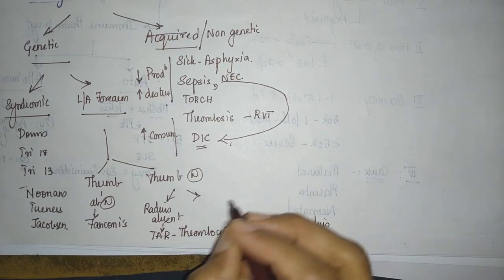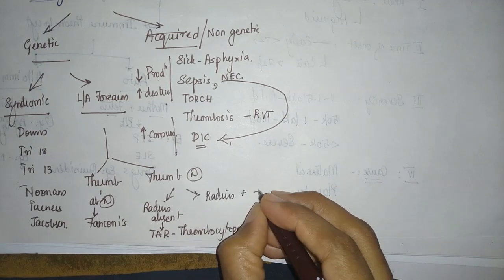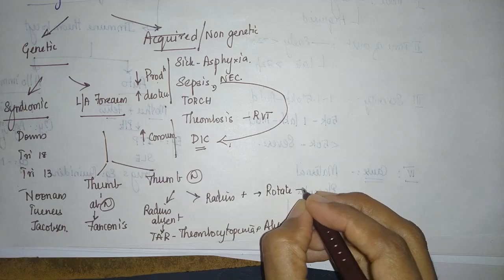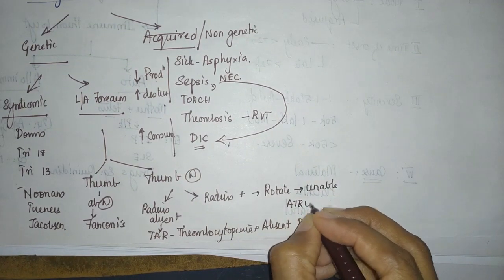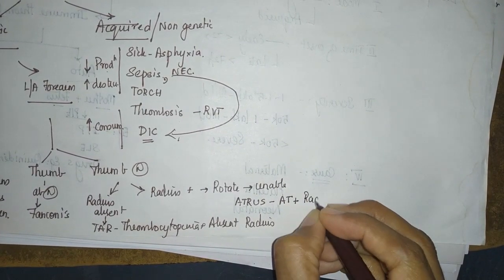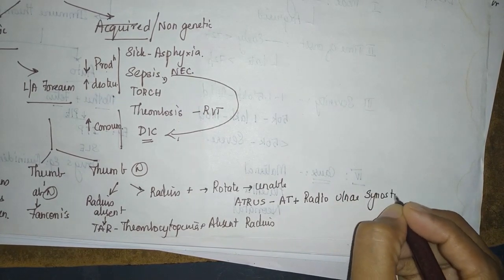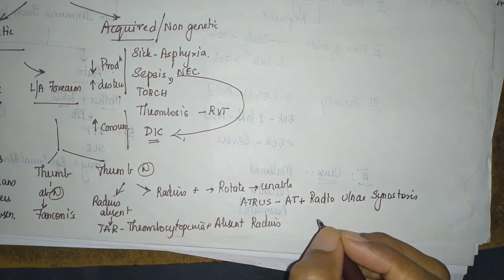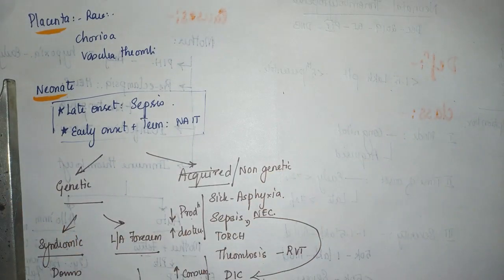If the radius is present, try to rotate the forearm. If you are unable to rotate, then you can think of ATRES — thrombocytopenia plus radio-ulnar synostosis. The bones are fused together and you can confirm it through radiological investigation. These are some of the causes of thrombocytopenia.